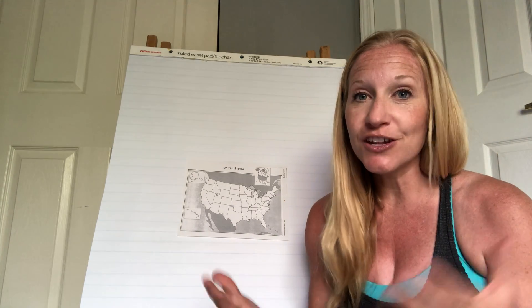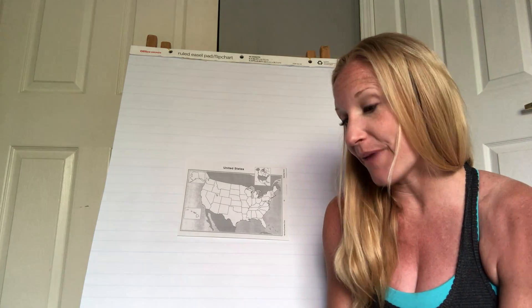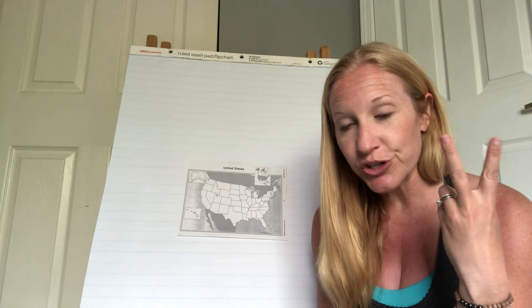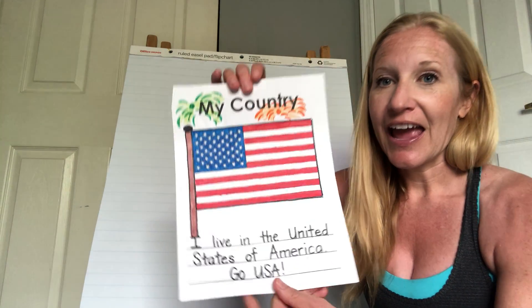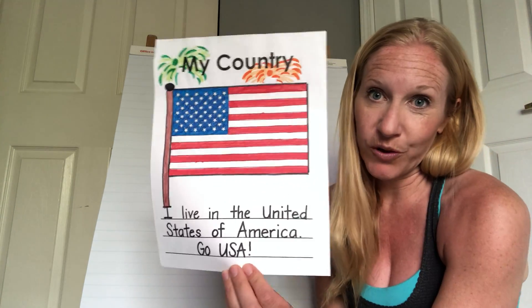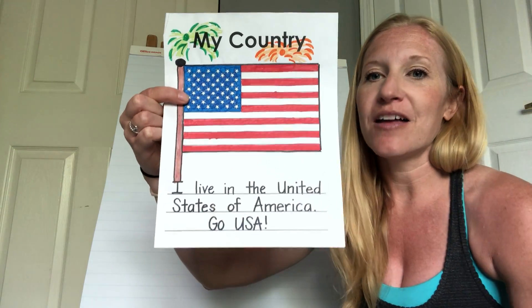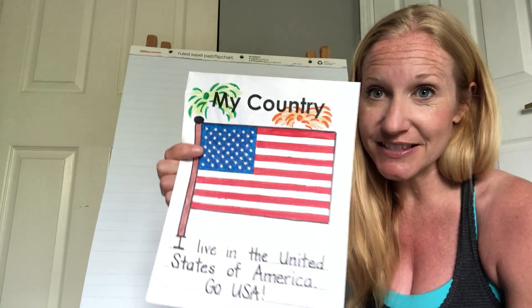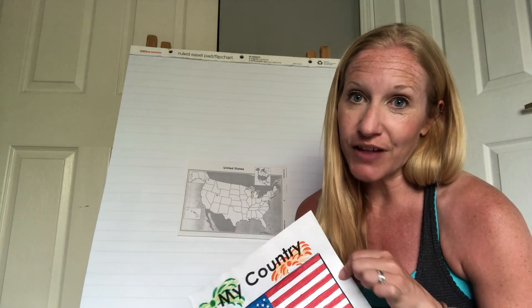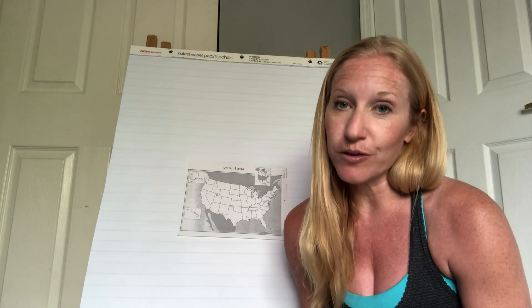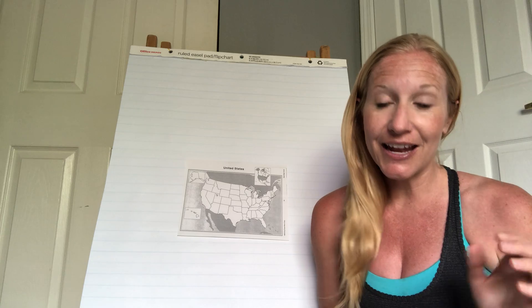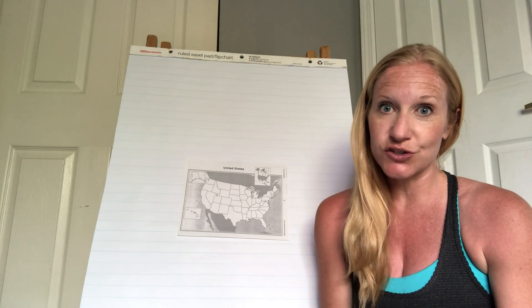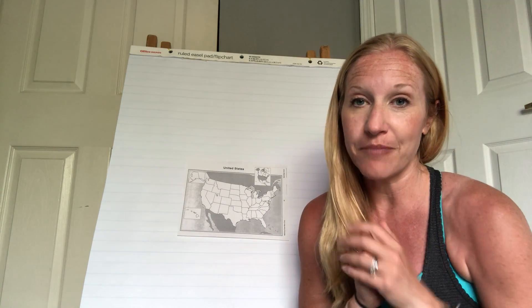In your packet, if you have printed out your Me on the Map packet, the next pages have two pages about our country. One is blank and we're going to work on that page tomorrow when we learn about our nation's flag. I'll show you exactly how to write the sentence and how to color the flag, because the flag is incredibly important to our country. We're going to learn about why it has 50 stars and 13 stripes — those things are symbolic, which means they each mean something.